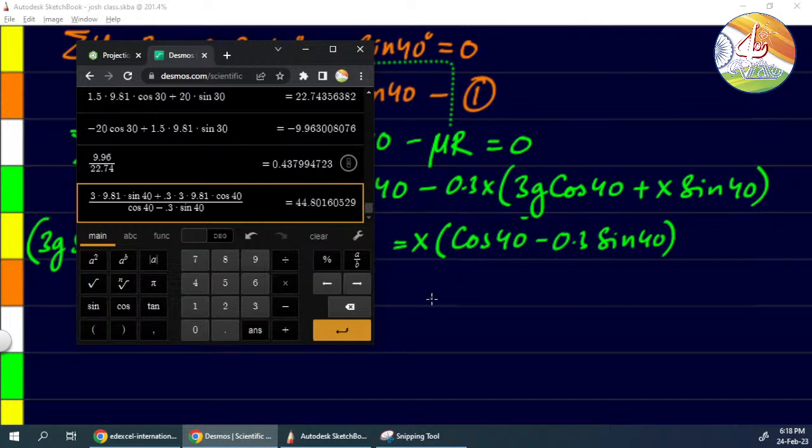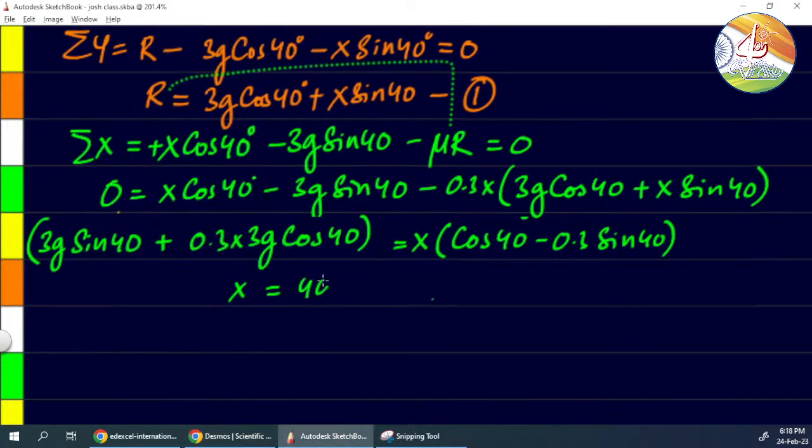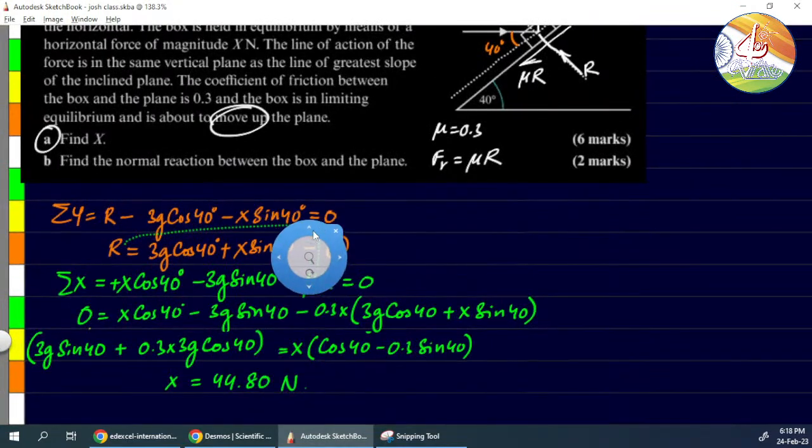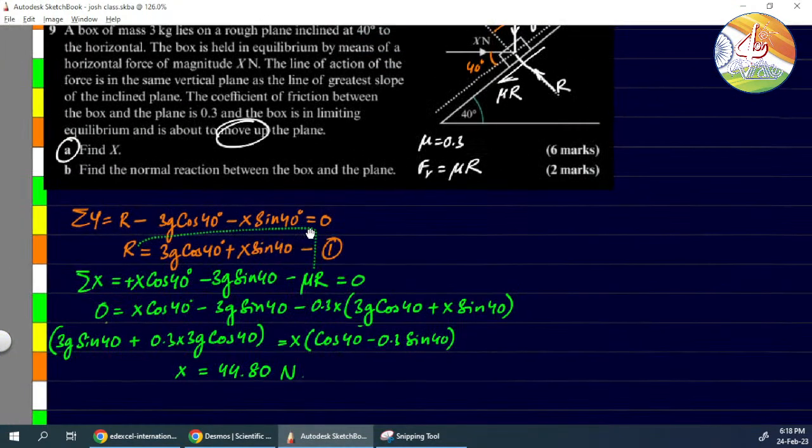How much are we getting? 44.8. 44.8 newtons. So this is the force required to start causing the motion on the upper side.